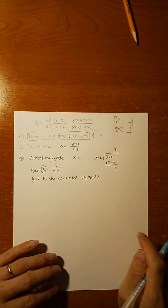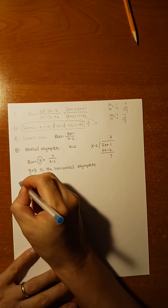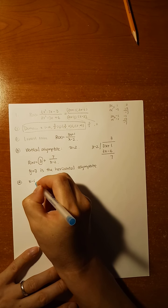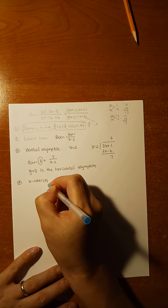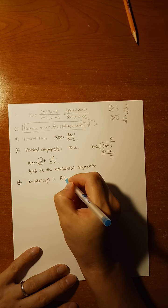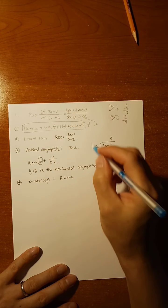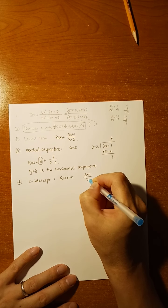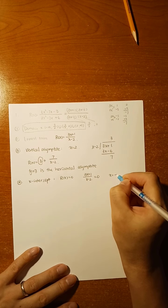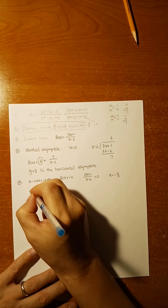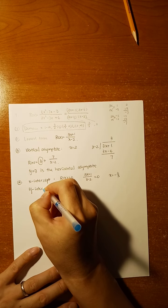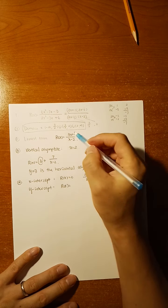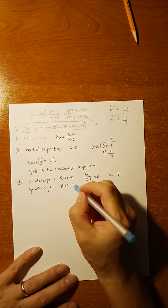It has one vertical asymptote and one horizontal asymptote. For the x-intercept, R(x) equals 0, so 3x plus 1 over (x minus 2) equals 0 gives x equals negative 1 over 3. For the y-intercept, R(0) gives negative 1 half.